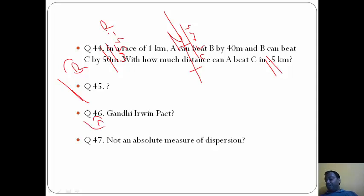Question 47: Which of the following is not an absolute measure of dispersion? The answer here is D, coefficient of variation, because it's a relative measure of dispersion, not an absolute measure. Range, mean deviation, and quartile deviation are absolute measures of dispersion.